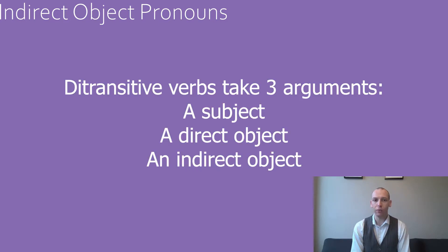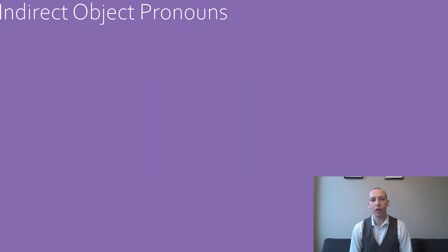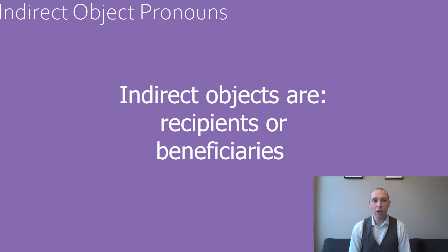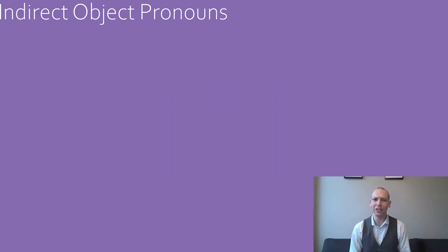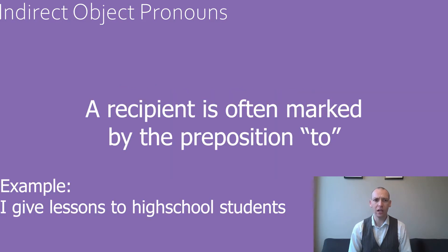Ditransitive verbs are verbs that take three arguments: the subject, the direct object, and an indirect object. Where the direct object was operated on by the verb, making the direct object the patient of the verb, the indirect object often plays the role of recipient of the verb. To demonstrate this, let's take the example: I give lessons to high school students.